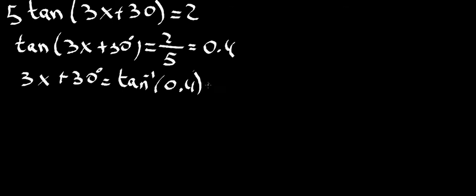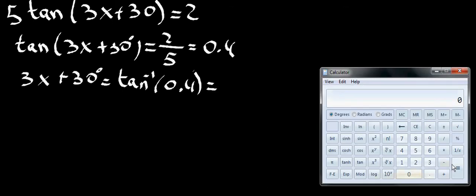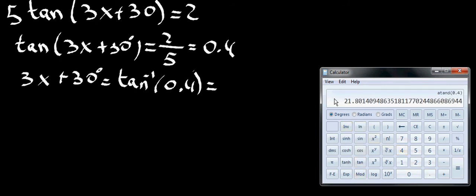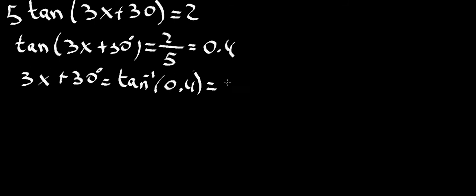Now we can calculate the angle: 3x plus 30 degrees is equal to the inverse tan of 0.4. We use the calculator to get this value — inverse tan of 0.4 is 21.8 degrees. This is the value we're going to be using in our unit circle.